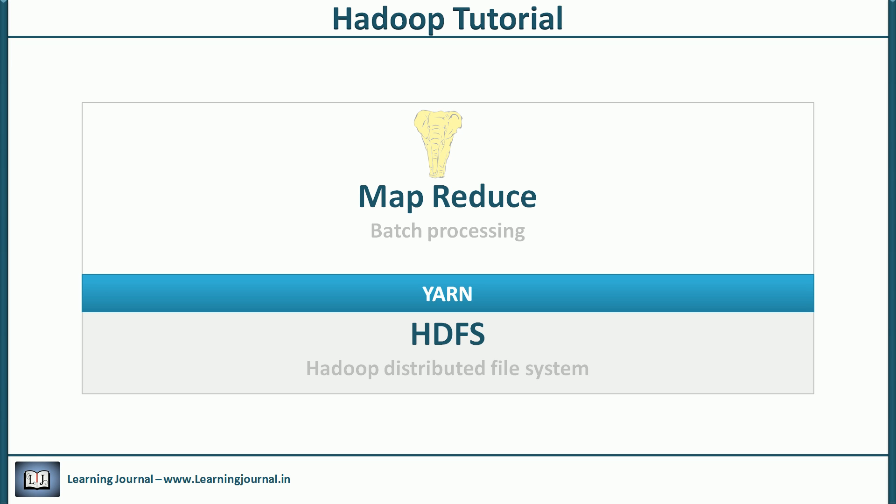YARN is responsible for managing cluster resources — meaning CPU, memory, disk IO, and network bandwidth. The MapReduce engine is responsible for executing MapReduce programs. YARN provides APIs for requesting and working with Hadoop cluster resources, and the MapReduce engine uses these APIs to request all its resource requirements and task scheduling.